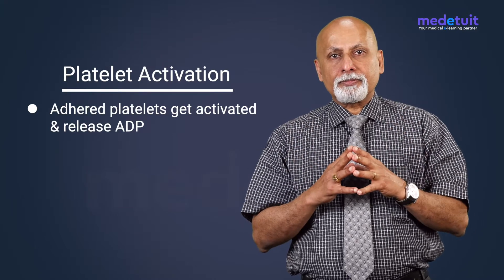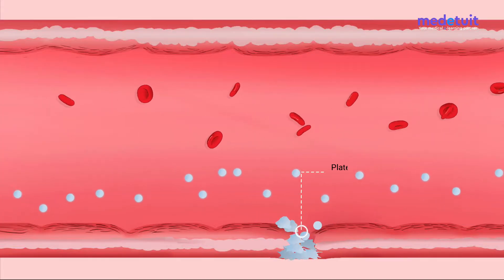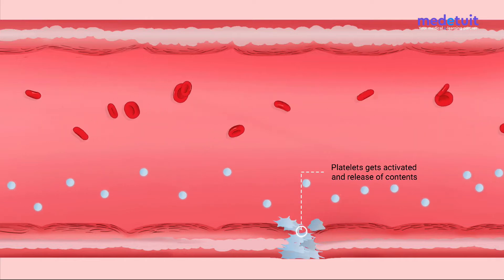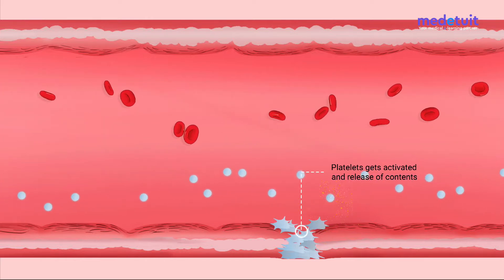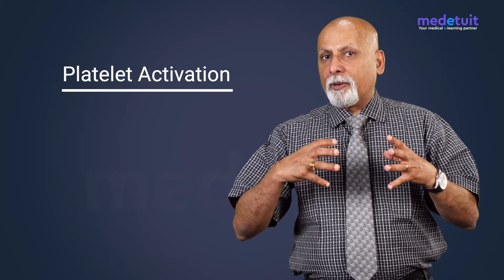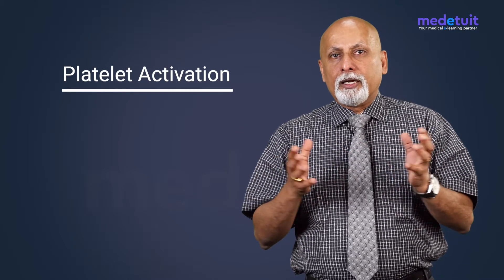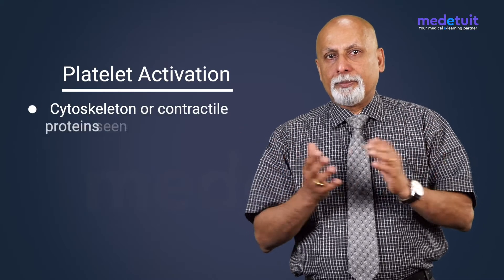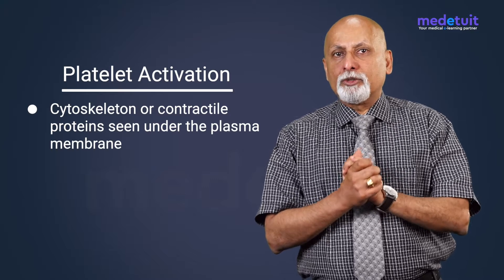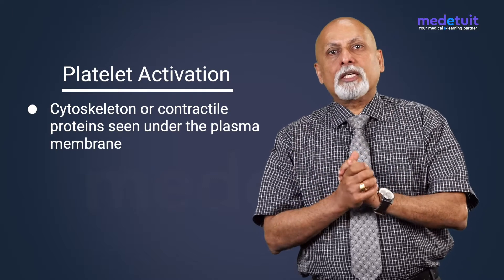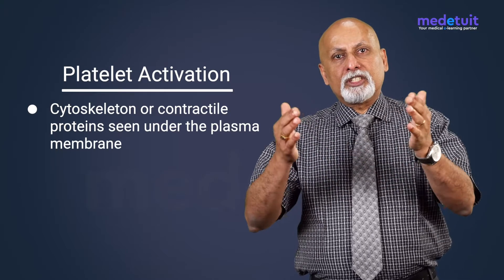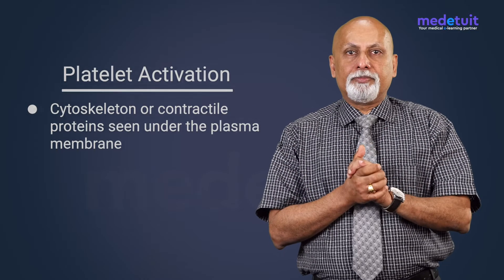In the video you can see the platelets sending out pseudopodia-like structures outwards, with cytoplasm flowing and bulges forming on the membrane. This structural change is mainly contributed by the cytoskeleton and contractile proteins seen under the plasma membrane, causing the platelet to change its shape. This is the process of activation of platelets.